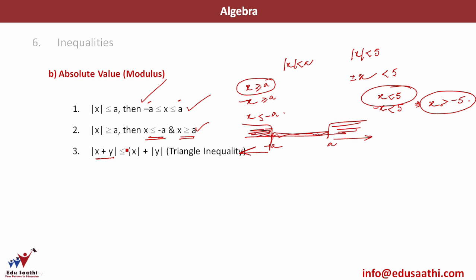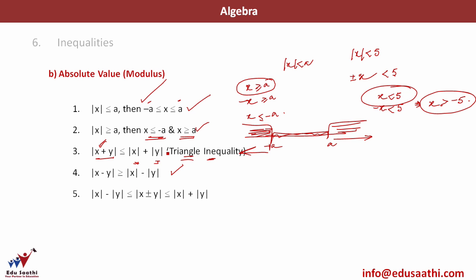Now, mod of (x plus y) is less than or equal to mod of x plus mod of y. This is also known as the triangle inequality — the sum of two sides is greater than or equal to the third side. Similarly, mod of (x minus y) is greater than or equal to mod of x minus mod of y. Combining both: mod x minus mod y is less than or equal to mod(x plus or minus y), which is less than or equal to mod x plus mod y.